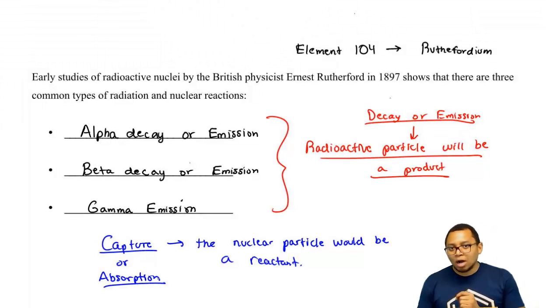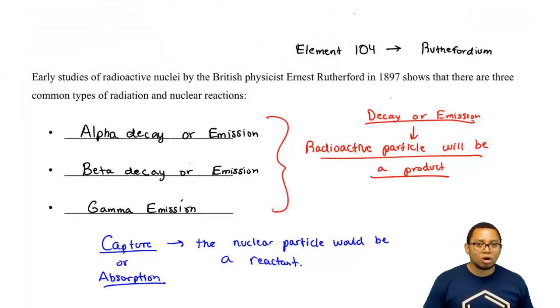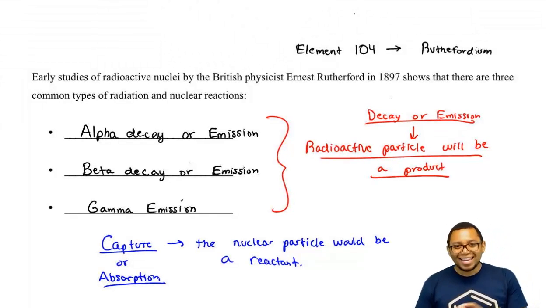So just remember, in a regular chemical reaction, we start out with, let's say, carbon, we end with carbon. But in a nuclear reaction, we're emitting or capturing radioactive particles. And as a result, that's going to change the identity of my element. You can start out with calcium and end up with something completely different like argon.